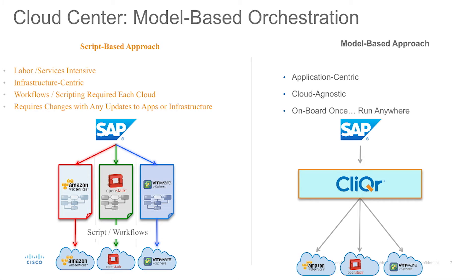Let's talk a little bit more about the model-based approach in Cloud Center. On the left, we see a script-based approach, which is really the more traditional way of doing things. We have an application at the top — maybe we're working with SAP HANA — and a different application flow has to be created depending on where we're deploying the app. In that case, we also have to maintain these three parallel tracks for each cloud solution we work with.